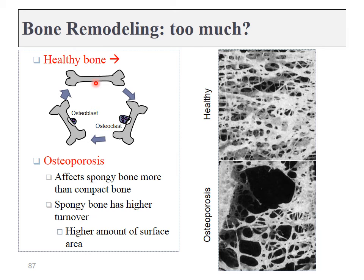Now that we've learned about bone tissue, we can move on to discuss osteoporosis. This is a condition that affects bone density. In healthy bone tissue, the remodeling units should be balanced — the amount of bone resorption done by osteoclasts should equal the deposition done by the osteoblasts. In osteoporosis, there is an imbalance: bone loss exceeds bone deposition. This will affect spongy bone more than compact bone — spongy bone has a lot more surface area, so the remodeling units are already working harder. If bone deposition slows down for any reason, it'll be spongy bone that's affected first.